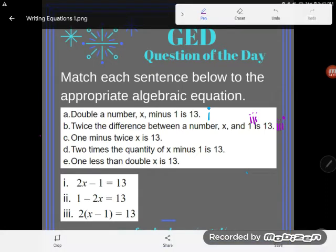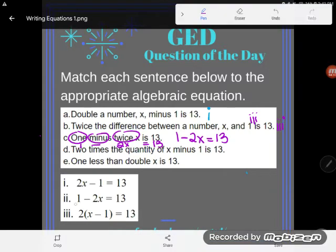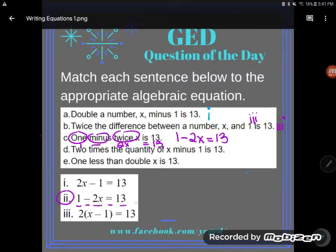Now, next one. One minus twice x is 13. Now this one seems simple. One minus twice x is 13. And indeed it is. One minus twice x is 13. Nice. That one's two. One minus two x is 13.